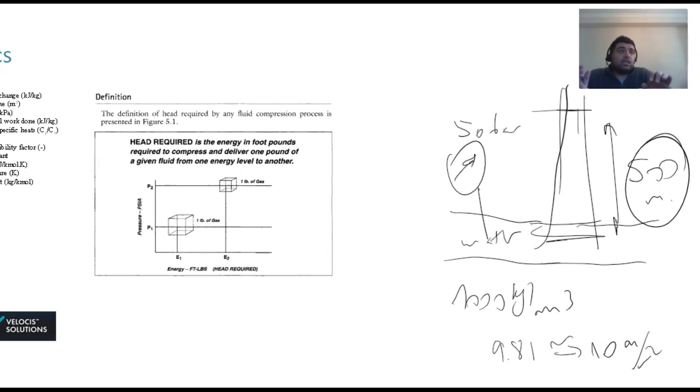Again, for liquids, it's straightforward because they are incompressible and the height of the column can be easily converted to the pressure and vice versa using the density.